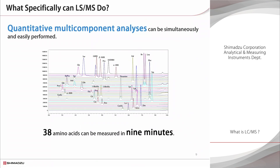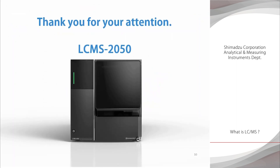Quantitative analysis can also be performed with LC. However, LC-MS has the advantage that it can analyze a number of components simultaneously. In this example, 38 amino acids are analyzed. LC-MS provides a very high level of selectivity, so this sort of simultaneous analysis can be performed with a measurement time of only 9 minutes. An LC-MS system is an effective tool that features excellent sensitivity and selectivity. It can be used for qualitative and quantitative analyses in a wide range of fields.